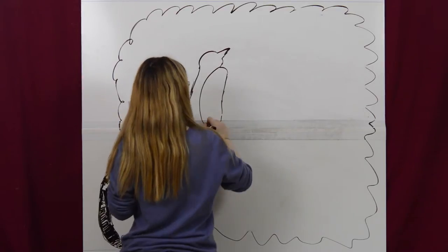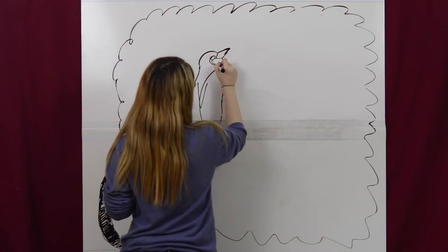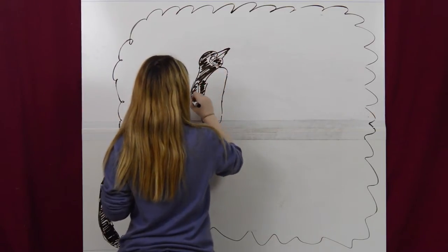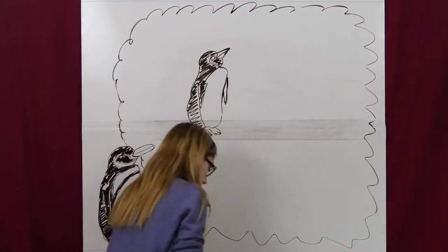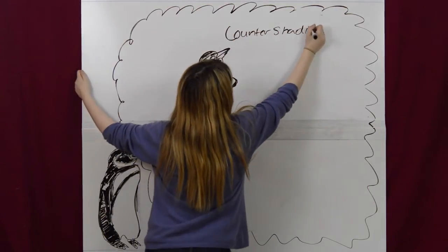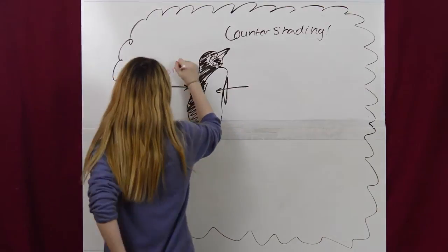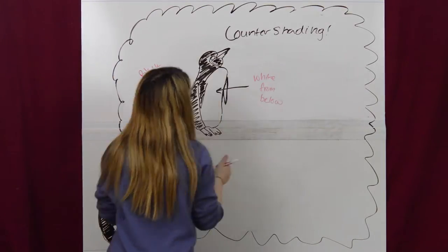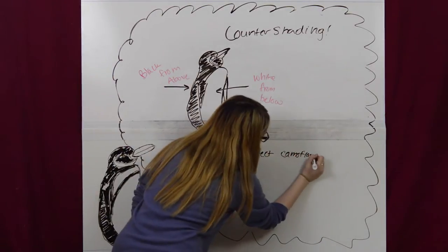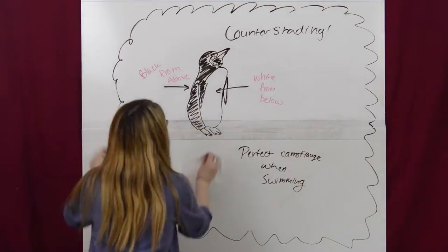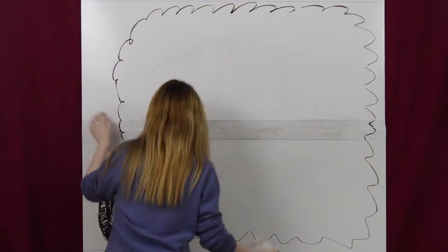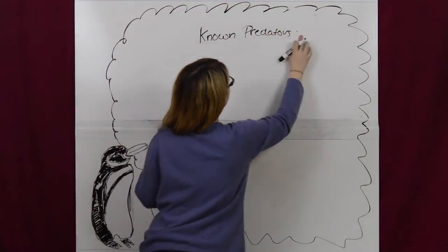When foraging for food in the water, sharks and other large marine animals prey on Galapagos penguins. The pattern of black and white countershading on their body makes them difficult to see underwater. A predator looking from above will see a black colored backside of the penguin that blends in with the darker, deeper water. A predator seeing the penguin from below will see a white underside that blends with the lighter colored, shallow water.